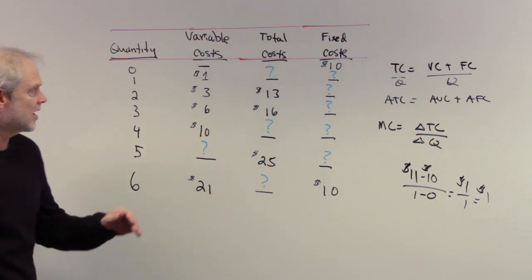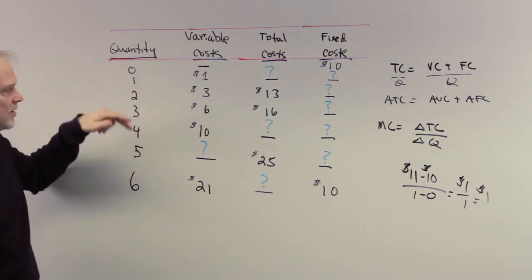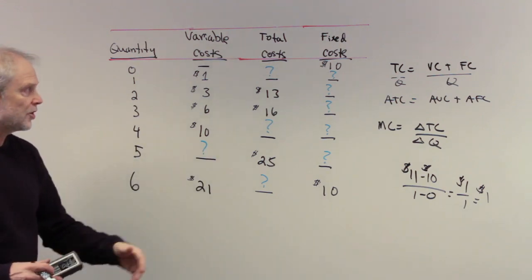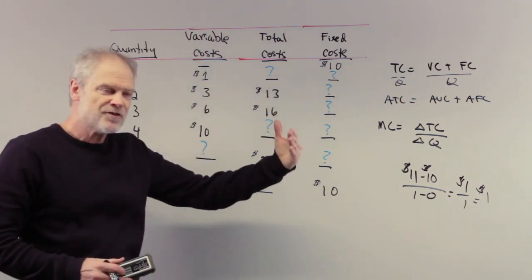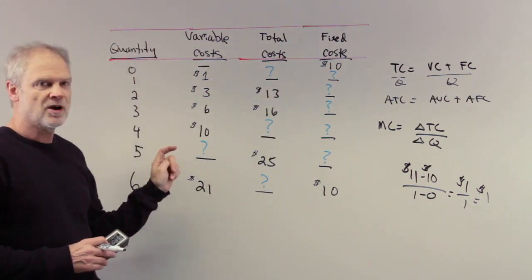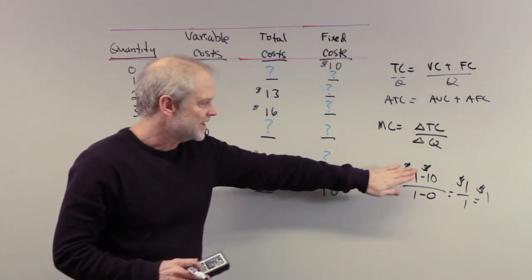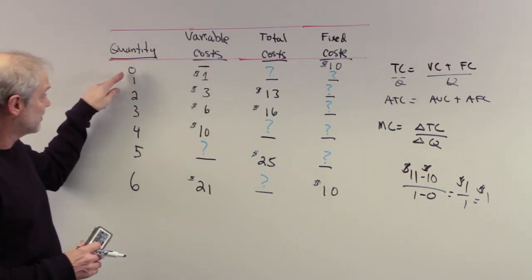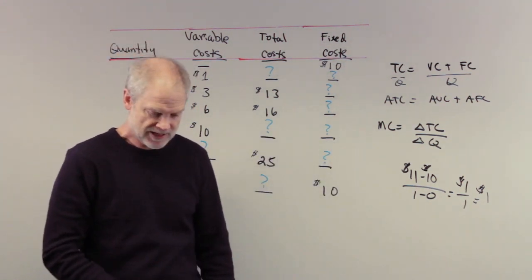So the marginal cost, the incremental cost of producing going from zero to one units, is how much extra cost you incur. Remember, the fixed costs don't change. So they never come into play in a marginal cost calculation. Only the variable costs come into play. And so the marginal cost of producing an extra unit here, when you go from zero to one is simply $1. And there it is right there for you.